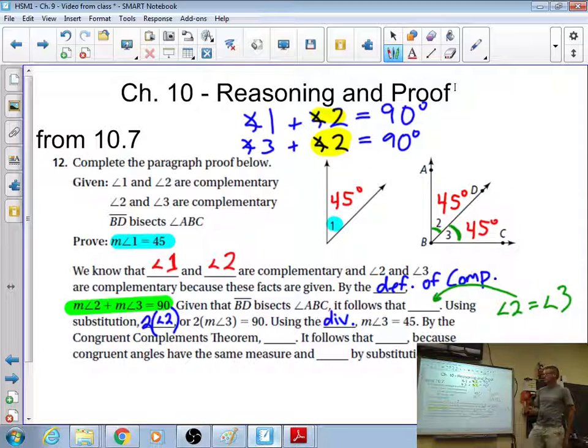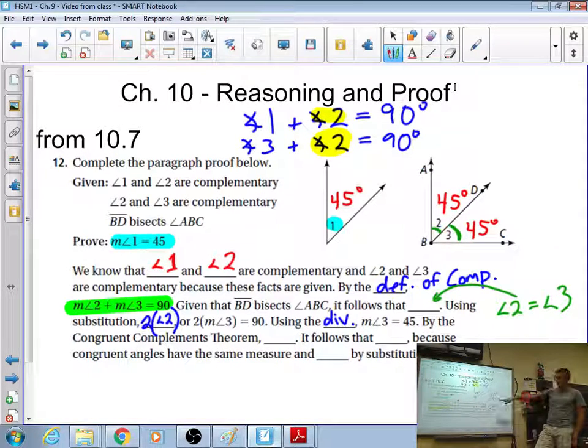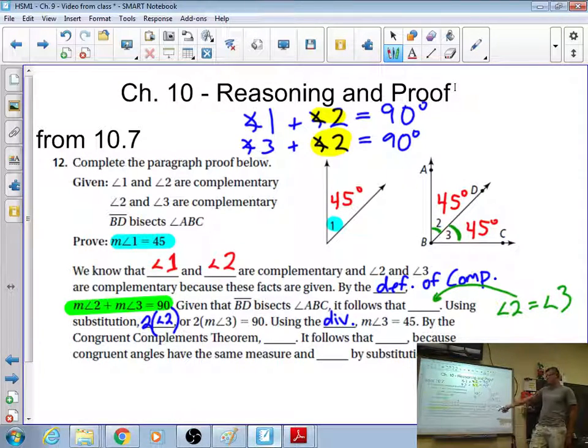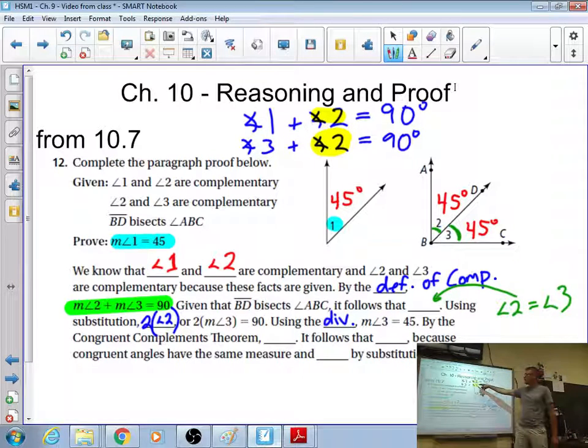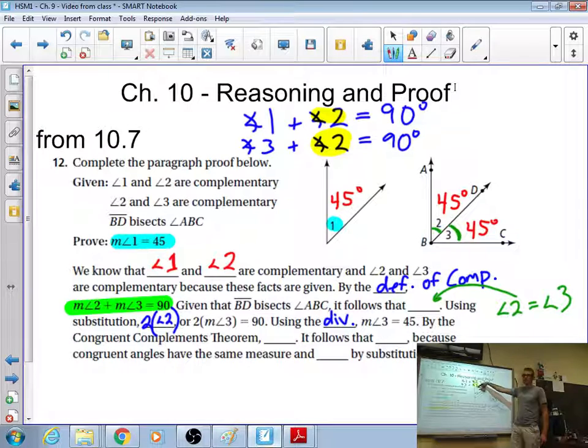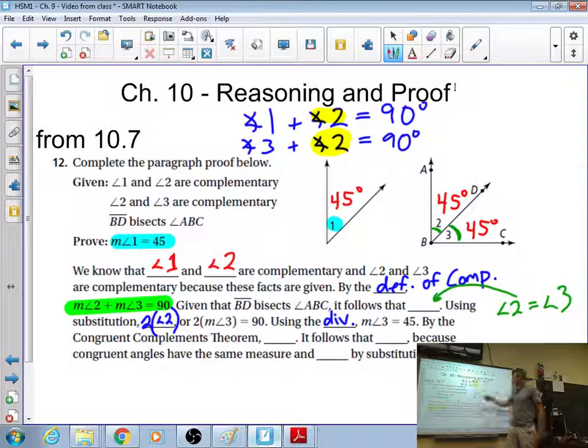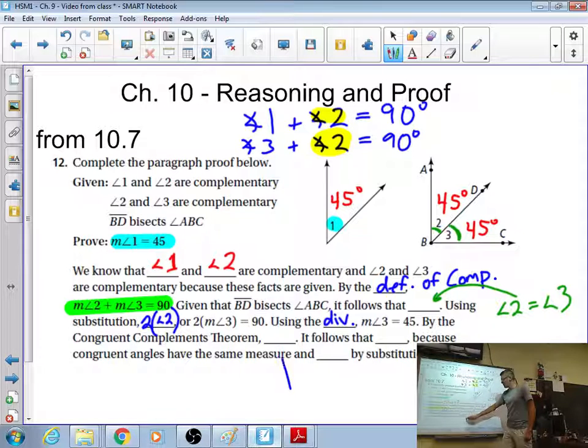If you remember, anytime you do something to both sides, what did you do with property of equality? Addition property of equality. Subtraction property of equality. It doesn't matter what we did. We do it to both sides, it's that property of equality. By the congruent complements theorem, well, if two angles, that congruent complements theorem is if two angles are both complementary to the same angle, they themselves are both congruent.